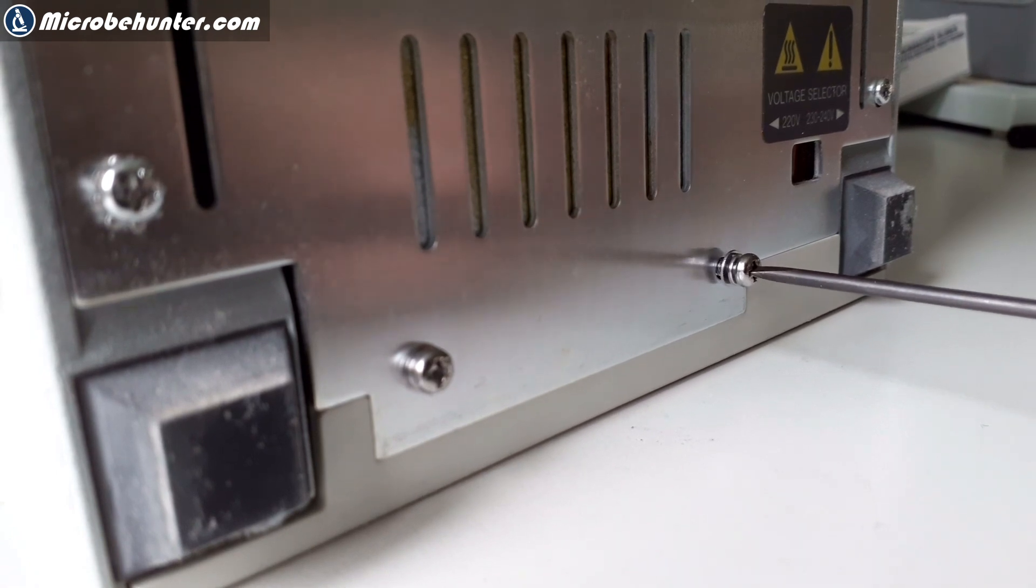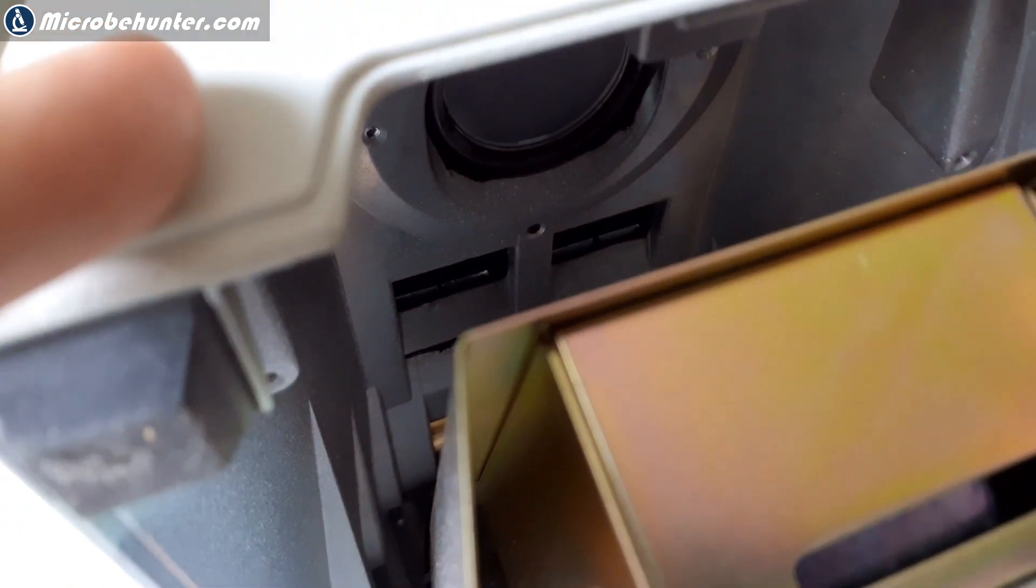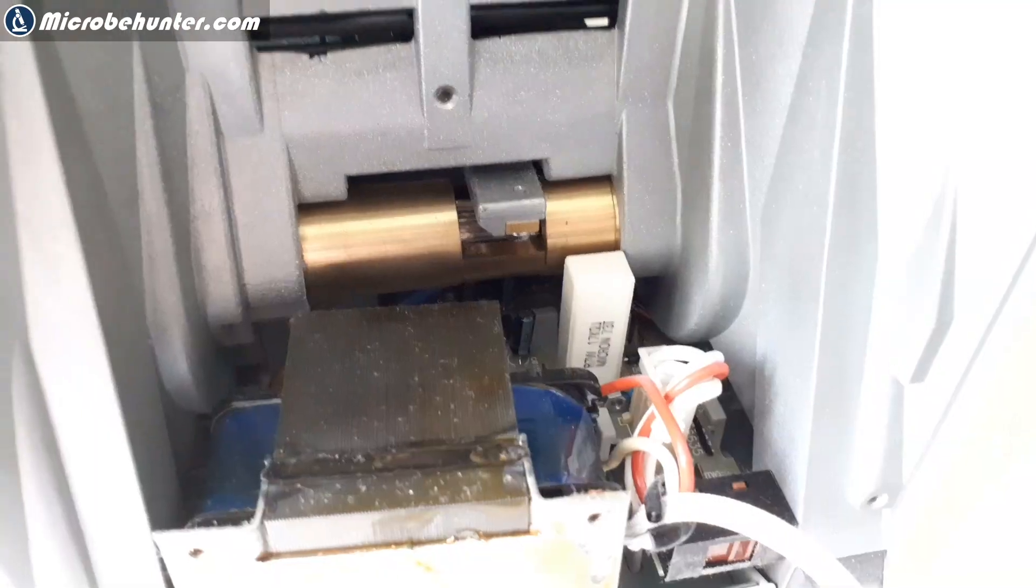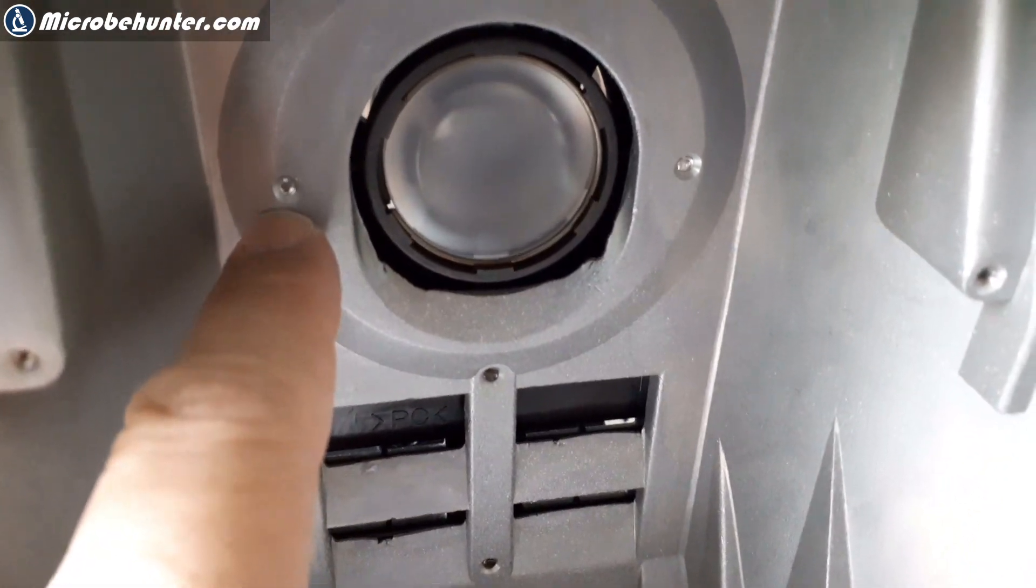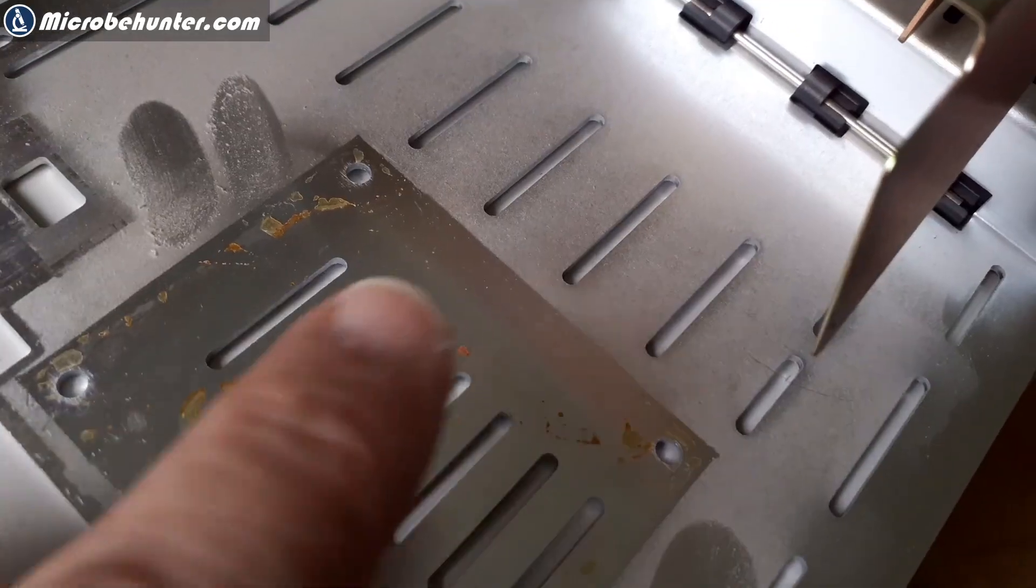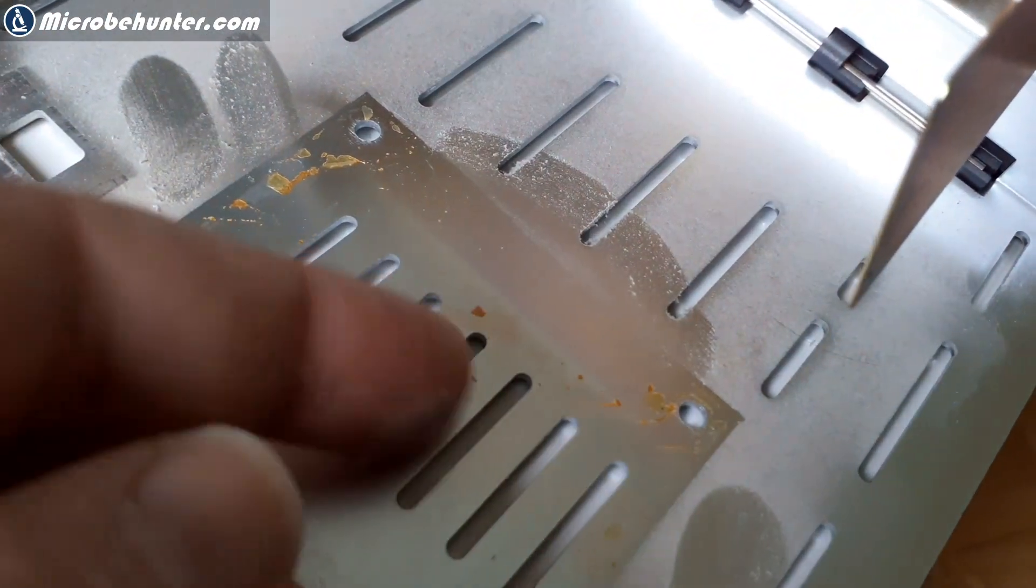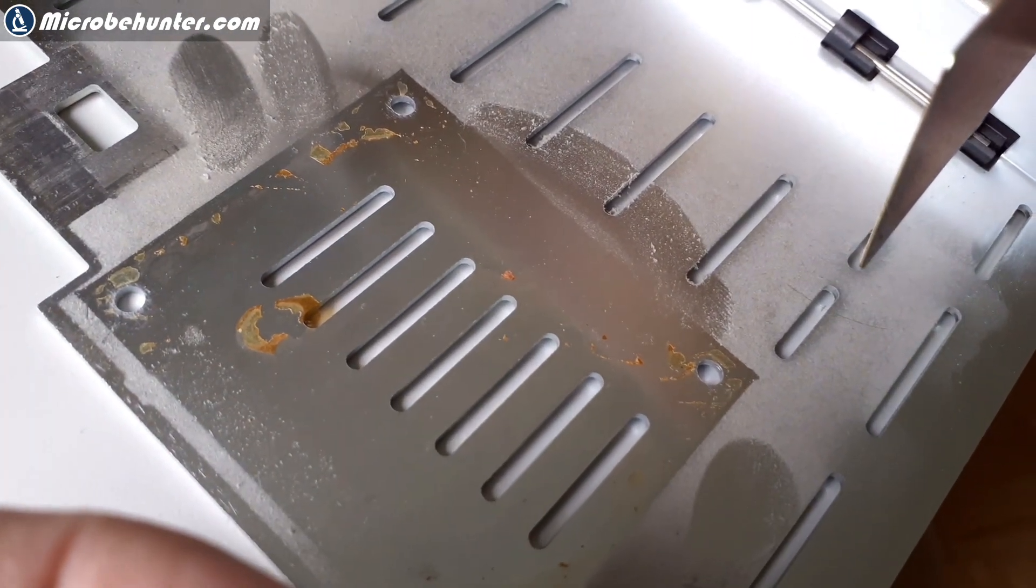So I also flipped the microscope over and took out the bottom part to see if this is actually a better place to reach the illumination system where I supposed the dirt to be. As a matter of fact, here, this is part of the Köhler illumination. Look how much dust and dirt there is all accumulated over the 20 years. So I cleaned all of this away.